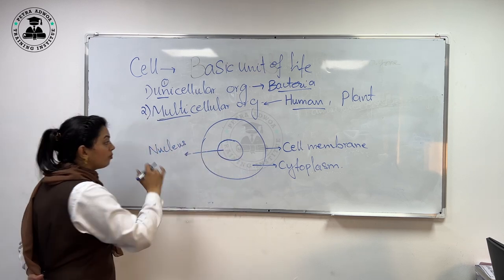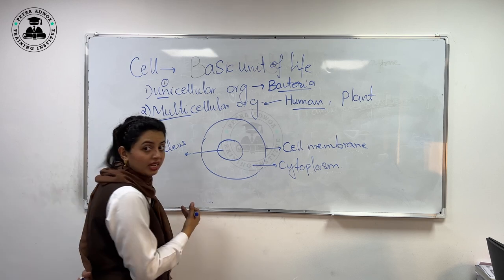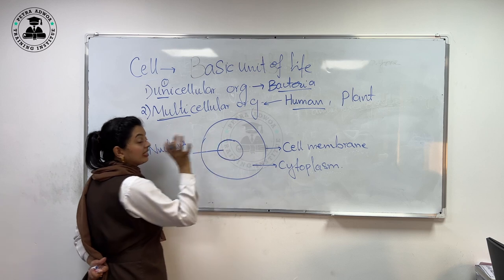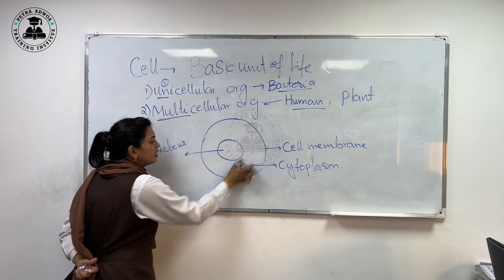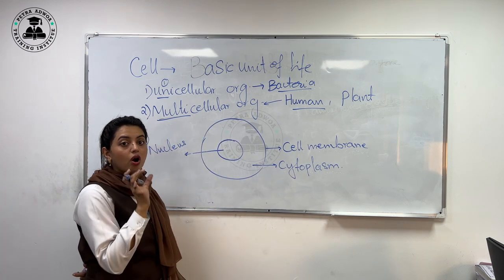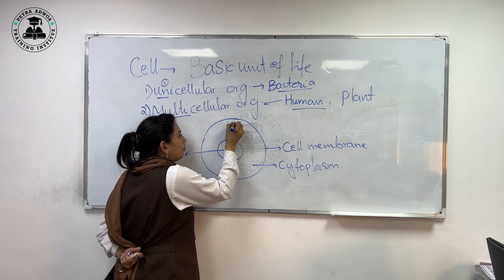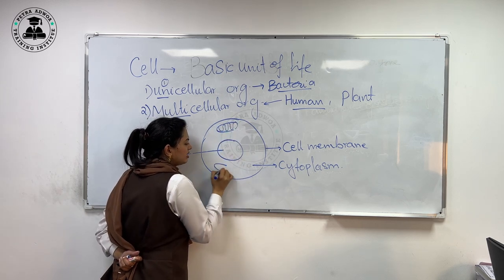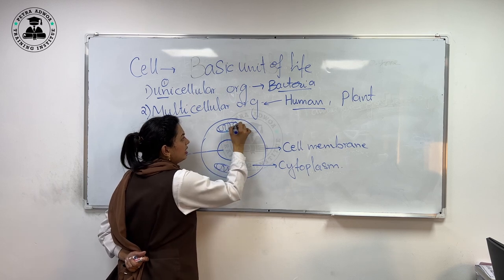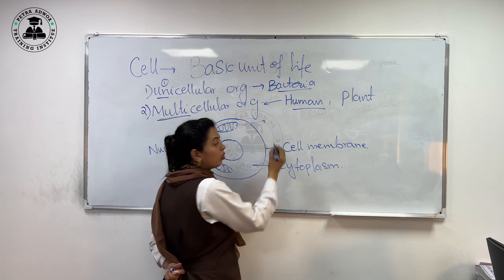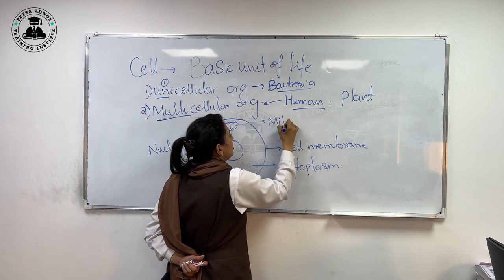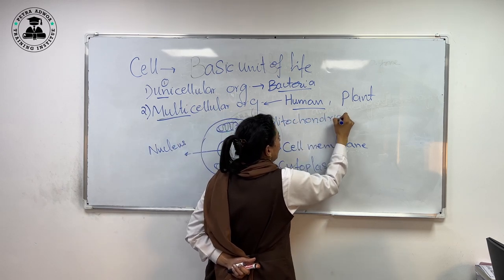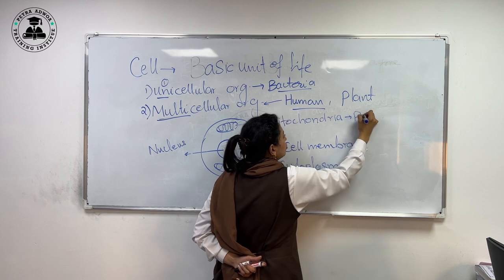The nucleus transfers information to the next generation. Then we have some important structures called organelles — structures present inside the cell. One important organelle is mitochondria. We call mitochondria the powerhouse of the cell.